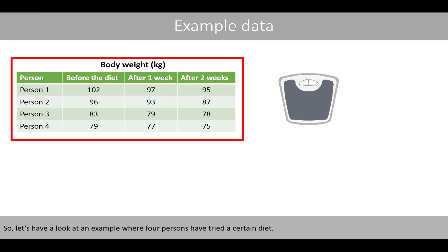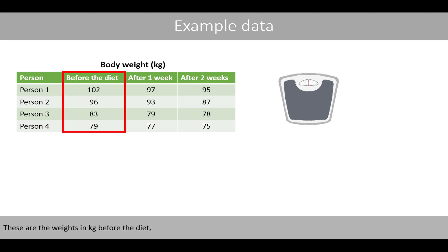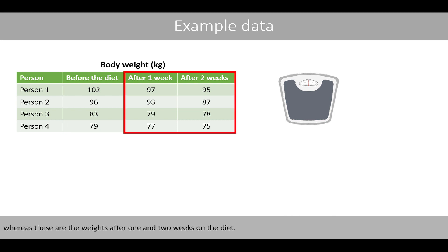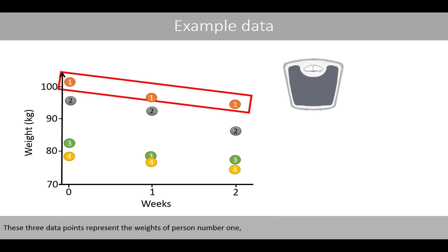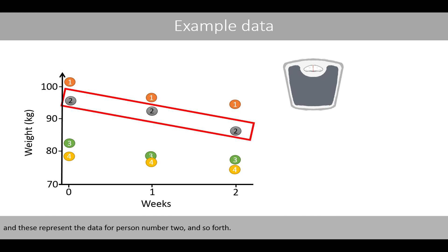Let's have a look at an example where four persons have tried a certain diet. These are the weights in kilos before the diet, whereas these are the weights after one and two weeks on the diet. Let's plot the data. These three data points represent the weights of person number one, and these represent the data for person number two, and so forth.